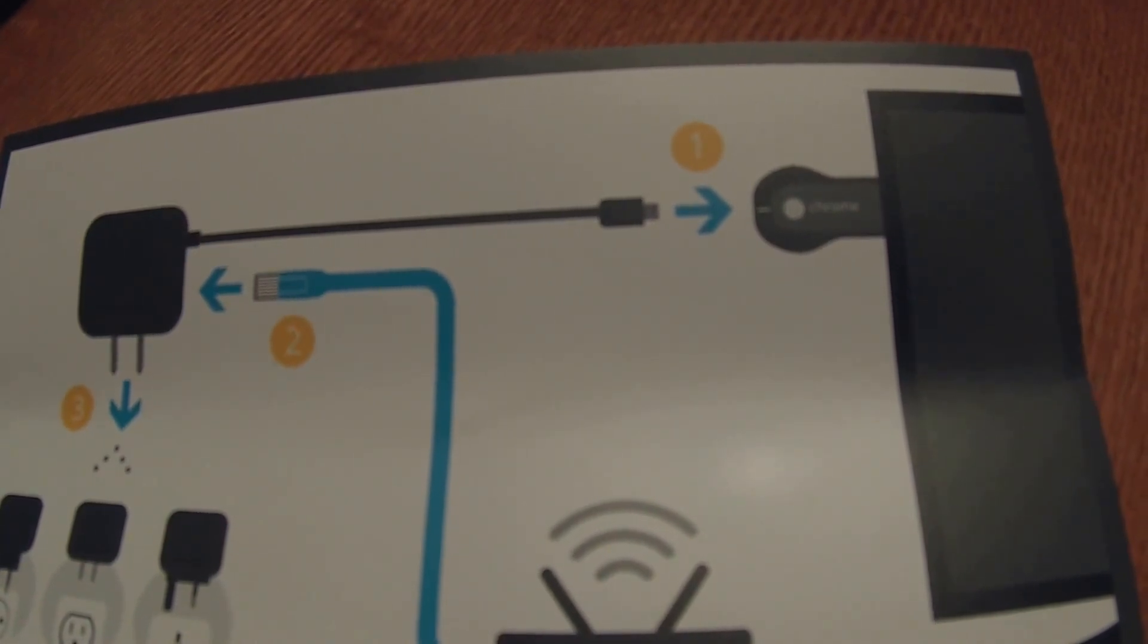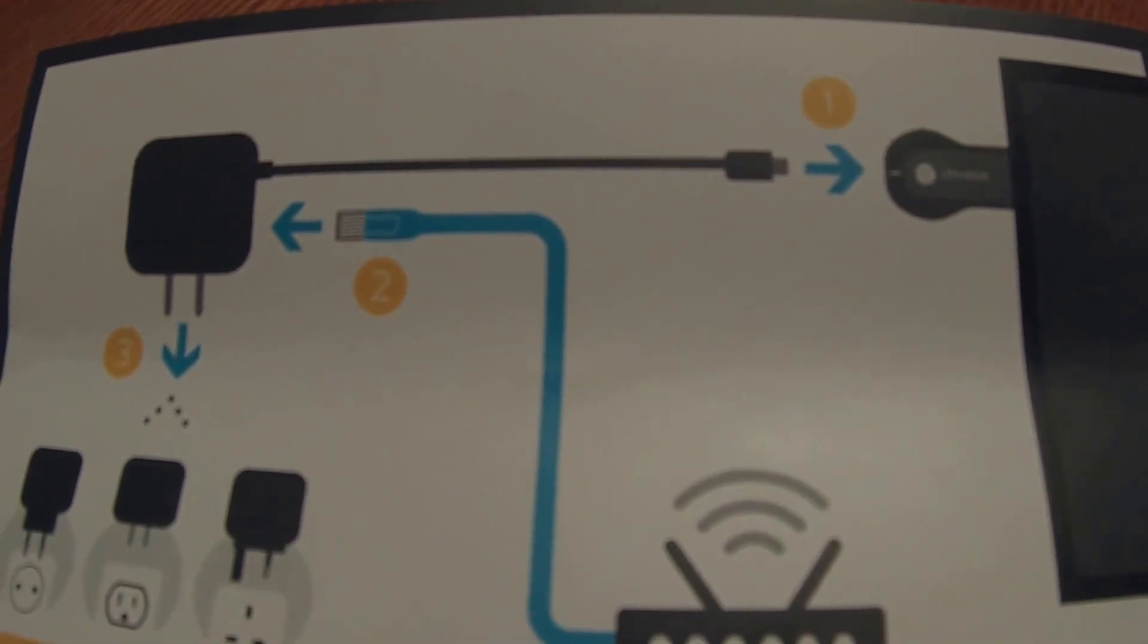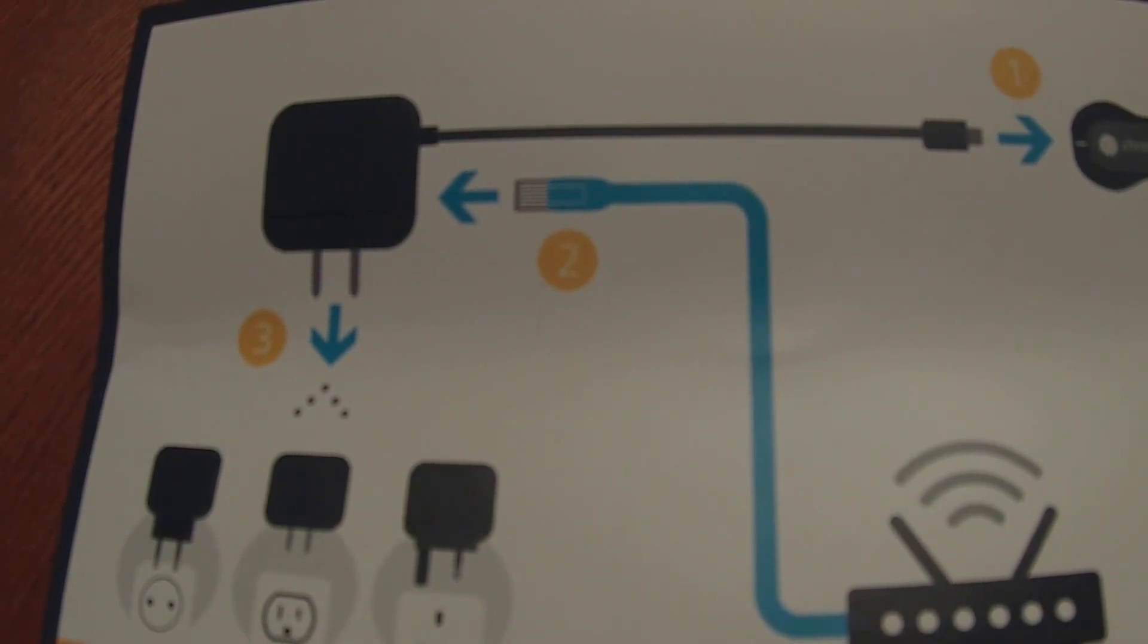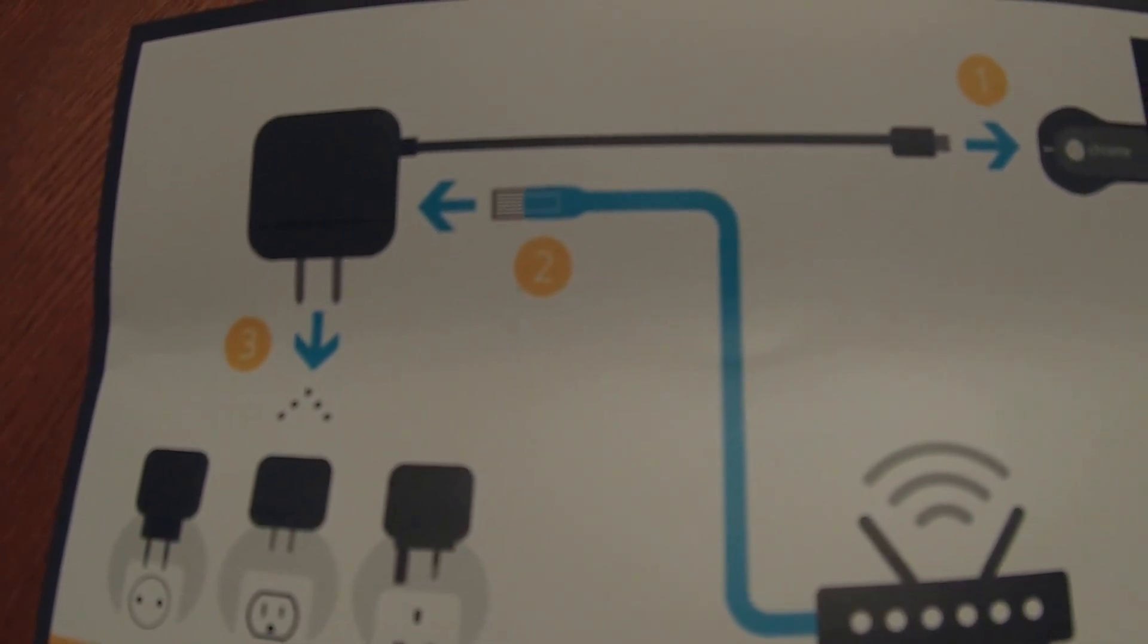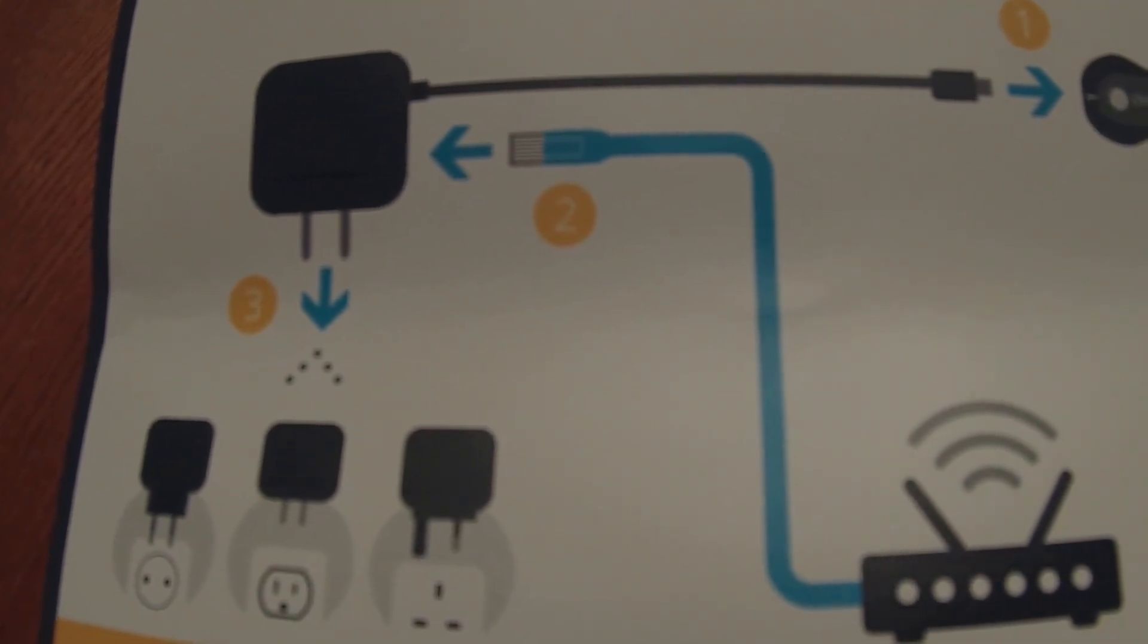So I disconnected all of the cables and followed the sequence exactly like it is in this card. I plugged the Ethernet adapter into the Chromecast first, and then I connected the Ethernet cable that was going from my router.